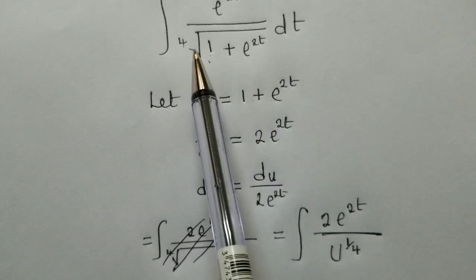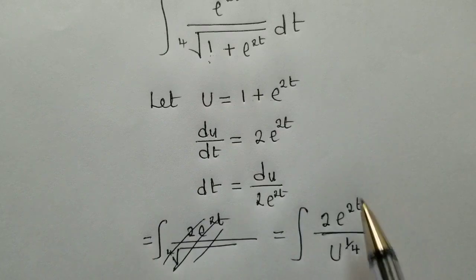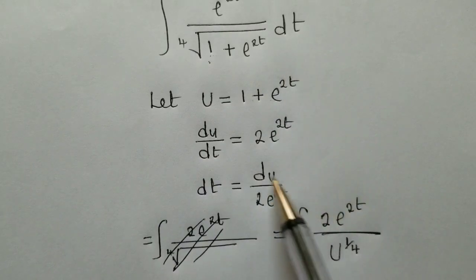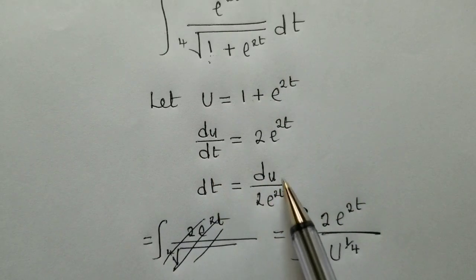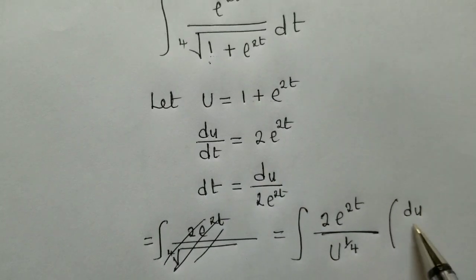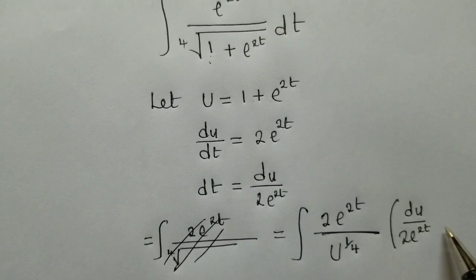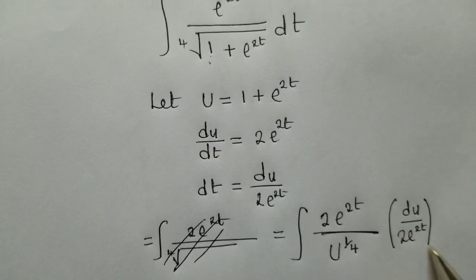And on dt here, we're going to put this. We substitute this. So we shall have du over 2 e power 2t there.